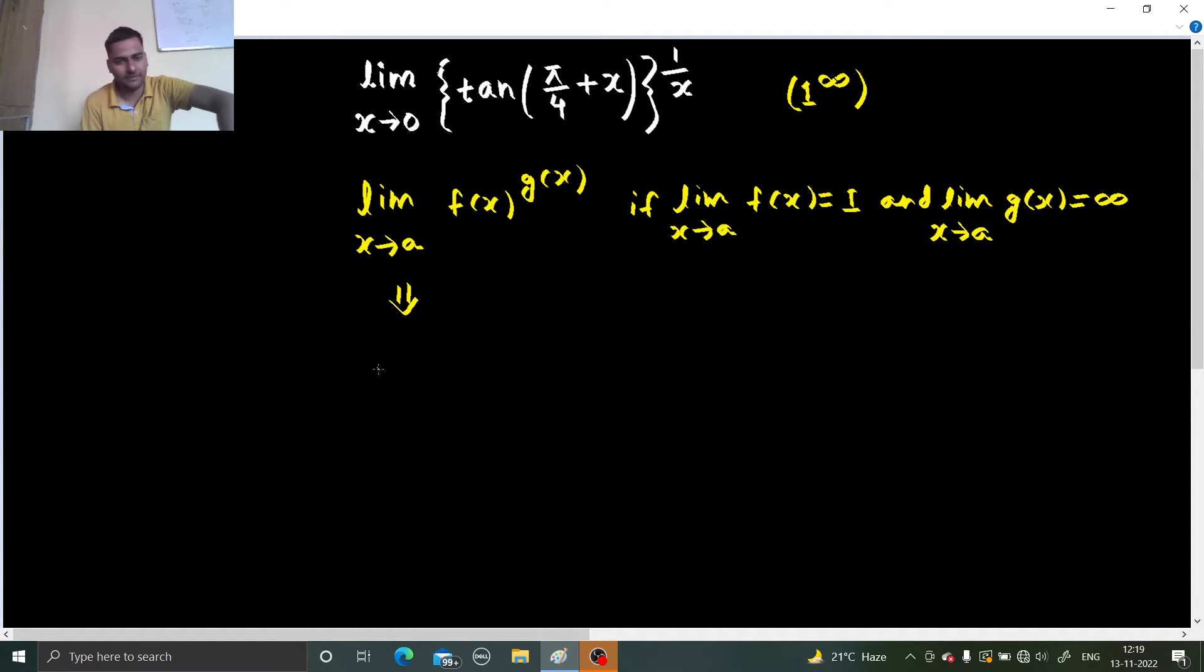We evaluate the limit as e power limit x tending to A, we bring this power down, so g(x) and we subtract 1 from the base, so f(x) minus 1. Because our given question is of the same form, so first do one step.